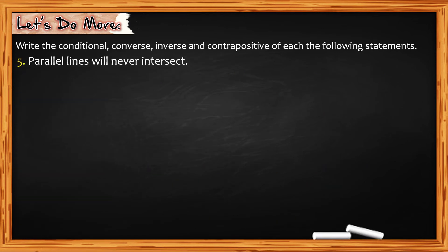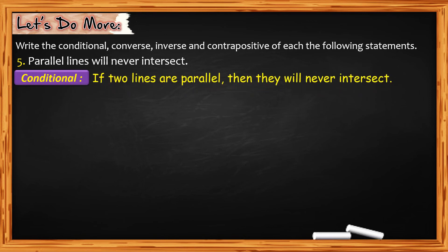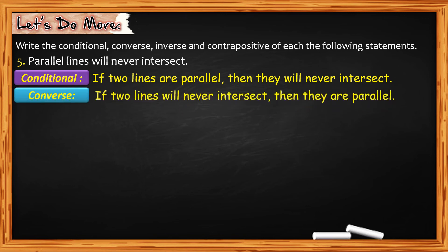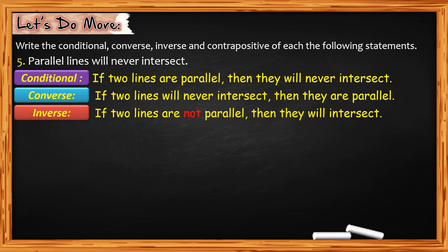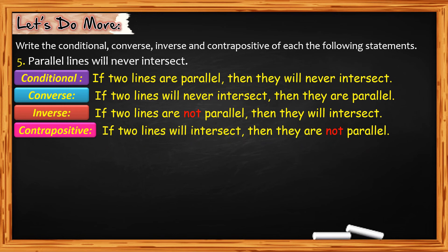For number 5: parallel lines will never intersect. For the conditional: if two lines are parallel, then they will never intersect. For the converse: if two lines will never intersect, then they are parallel. For the inverse: if two lines are not parallel, then they will intersect. Note: we already have the negative word never — if you negate a negative, it becomes positive, so we remove the word never. For the contrapositive: if two lines will intersect, then they are not parallel.